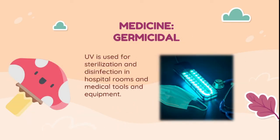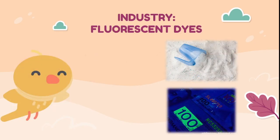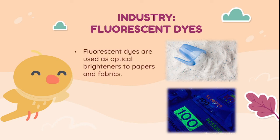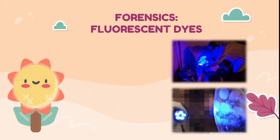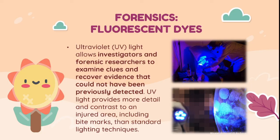Ultraviolet is used for sterilization and disinfection in hospital rooms and medical tools and equipment. Ultraviolet is also used in fluorescent dyes, which are used as optical brighteners for papers and fabrics. It is also used for watermarks in currency, authentic paintings, and important documents like passports. Fluorescent dyes are also used in forensics, where UV light allows investigators and forensic researchers to examine clues and recover evidence that could not have been previously detected. UV light provides more detail and contrast to an injured area, including marks not visible under standard lighting techniques.